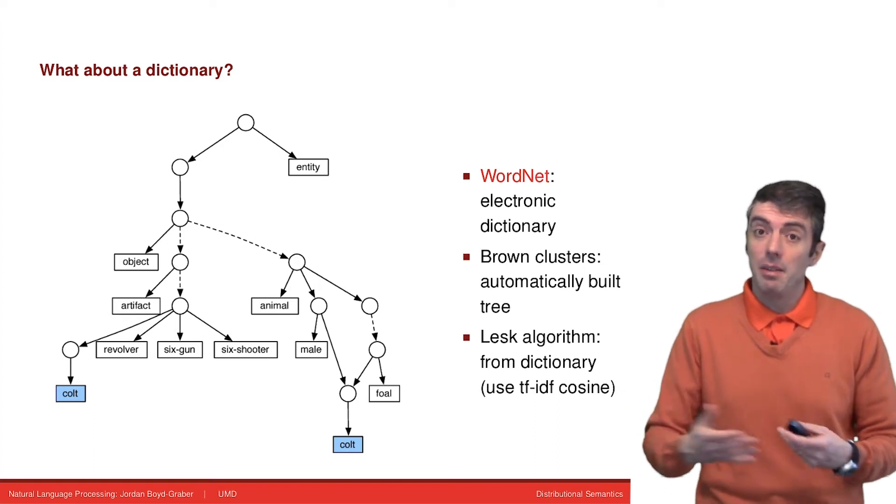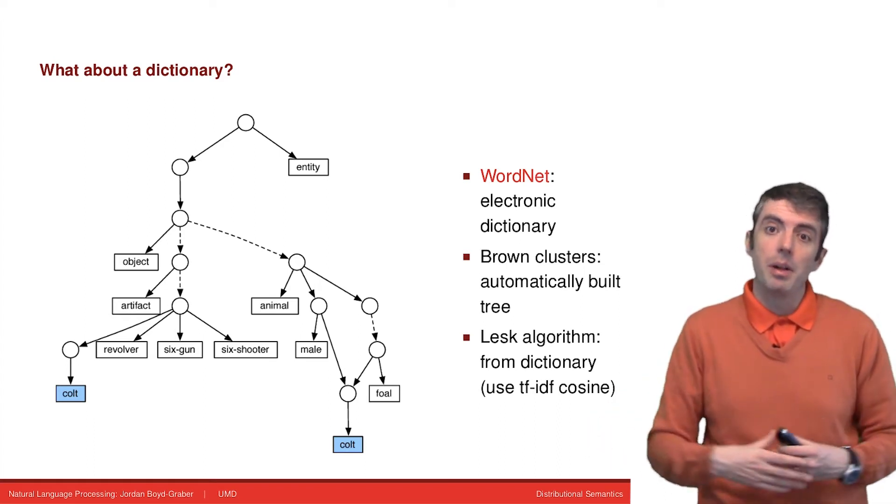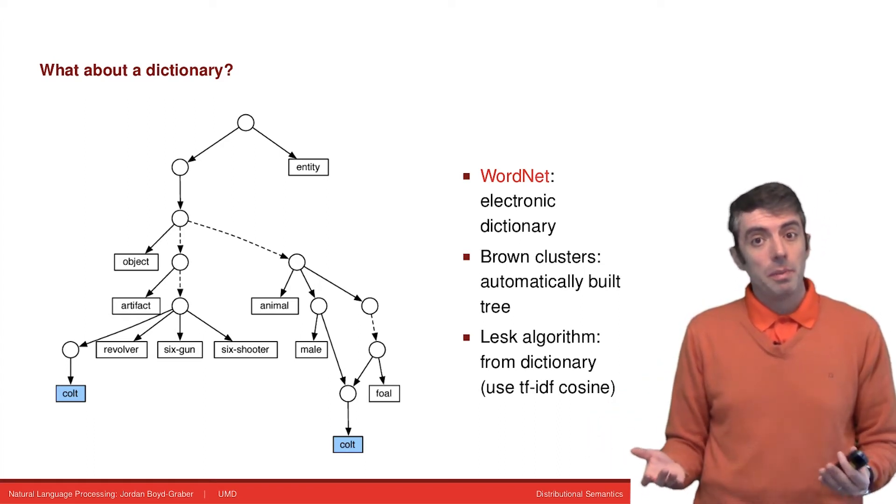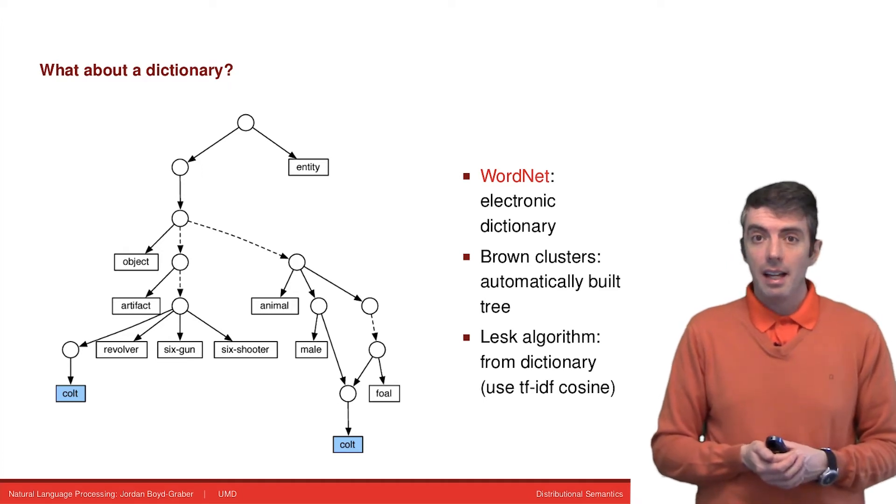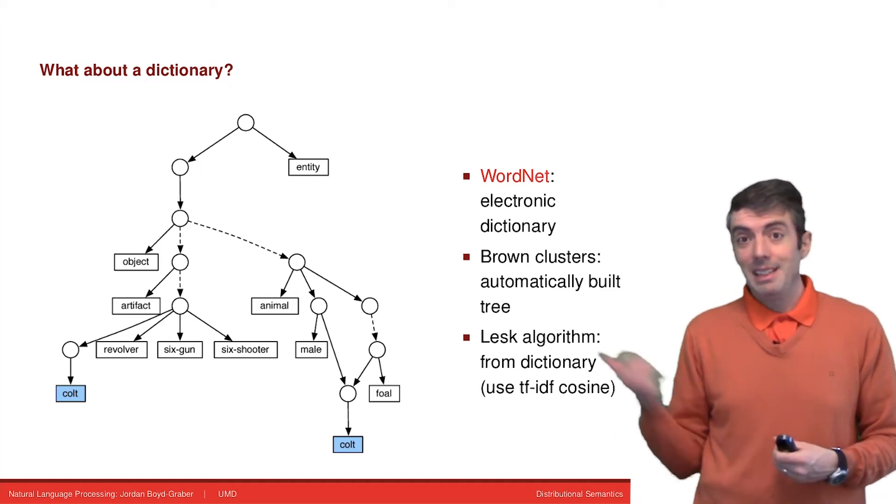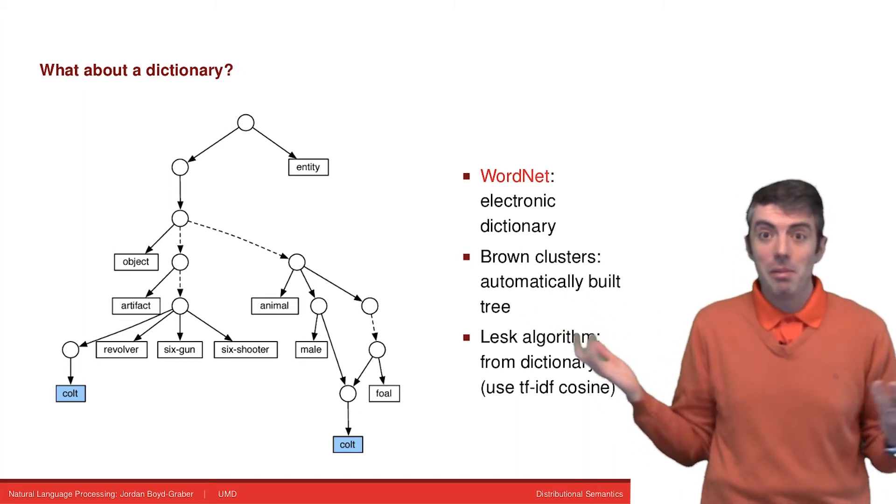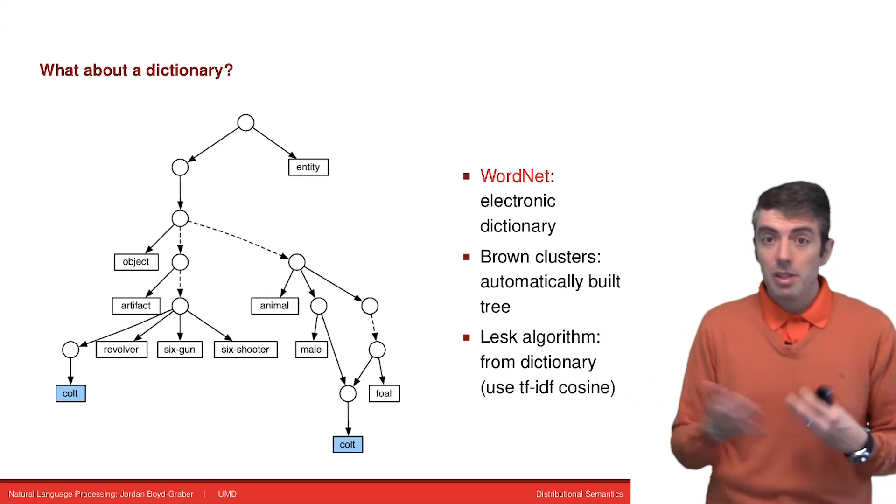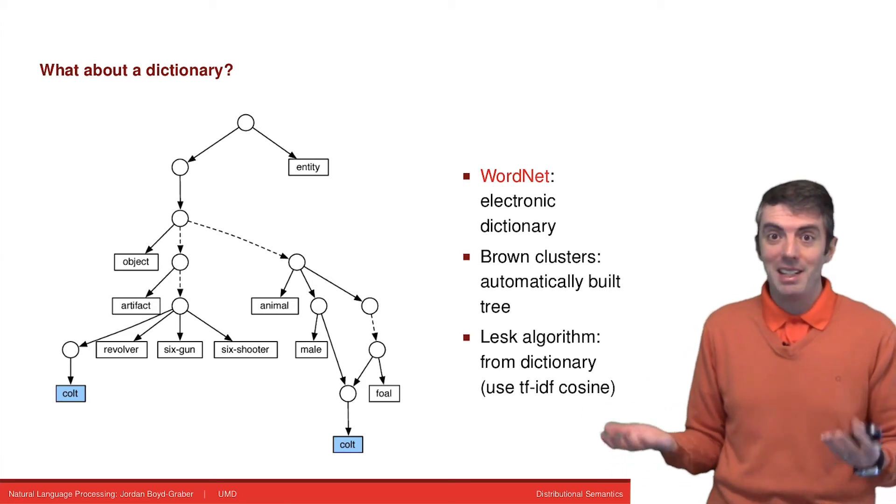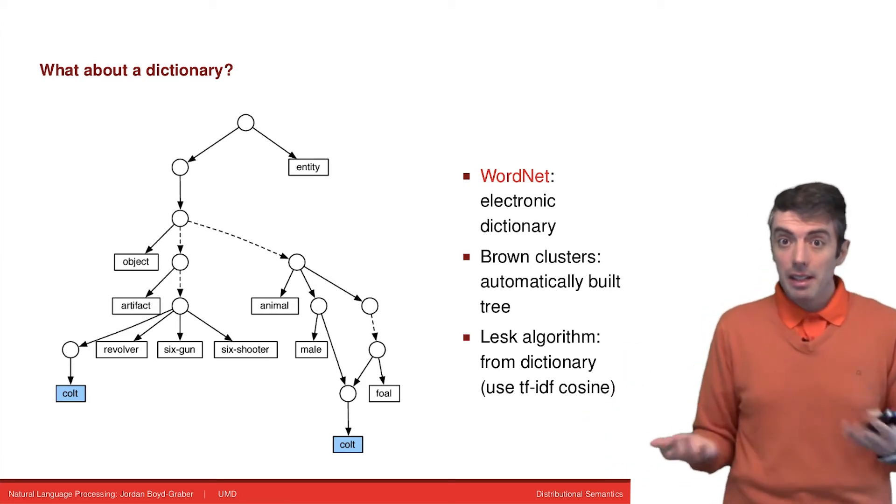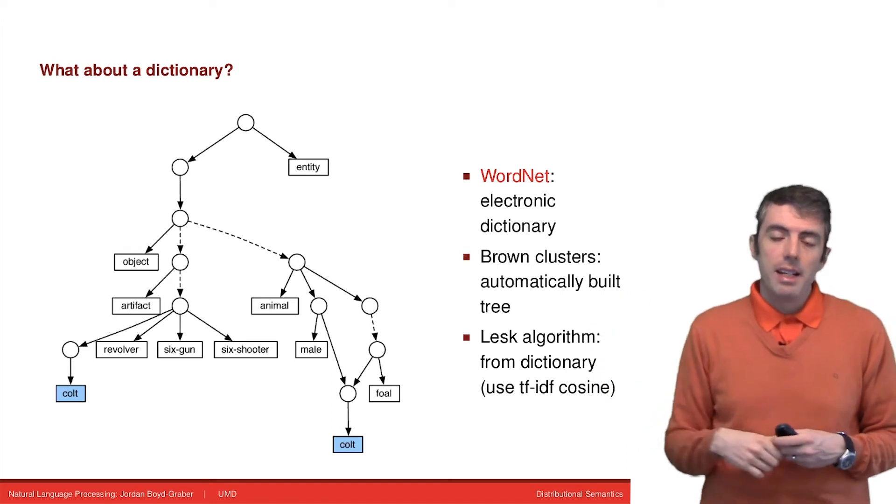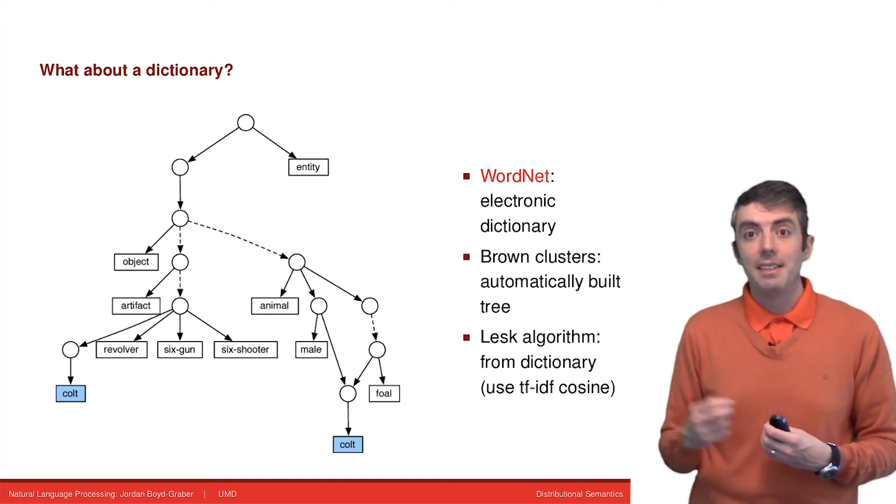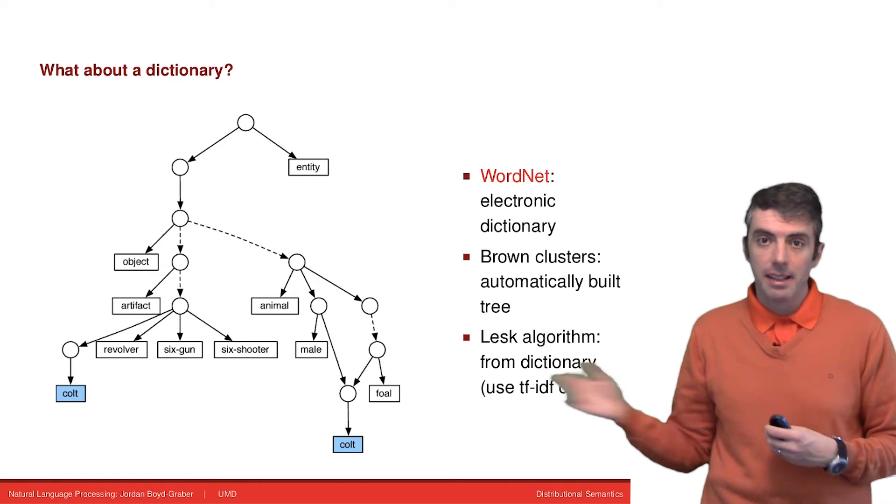But historically, that's not what happened. There were a lot of things in between. Even though we won't spend too much time on it in this class, just to give you a historical perspective, let me mention some of the things that came in between while we were figuring this stuff out. So what about a dictionary? You could use that to represent a word's meaning. That's what humans do. There are electronic dictionaries like WordNet.